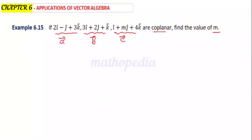It's given that the three vectors are coplanar. If three vectors are coplanar, then the scalar triple product — that is, the box product of a, b, c — should be zero.